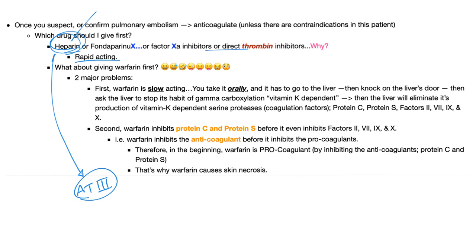What does antithrombin-3 do? It inactivates serine proteases such as factors 9, 10, 11, and 12. Why not give warfarin first? There are two major problems. Number one, it's very slow acting — you take it orally, it goes to the liver, and the liver must stop gamma-carboxylation (which is vitamin K dependent) before eliminating production of vitamin K-dependent coagulation factors: protein C, protein S, and factors 2, 7, 9, and 10. Until this happens, the patient could die.